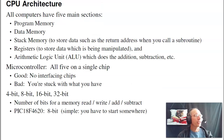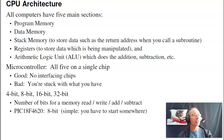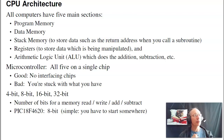In terms of architecture, almost all processors are about the same. Any computer has to have five main sections: program memory (the program that tells the computer what to do), data memory (where you put data like a counter), stack memory (optional — if you use subroutines, you need to remember where you came from so you know where to return to), registers (where you store data to be manipulated), and the arithmetic logic unit (which does addition, subtraction, etc.). A microcontroller has all five of these on a single chip. The good thing is there's no interfacing required; the bad thing is you're stuck with what you have.